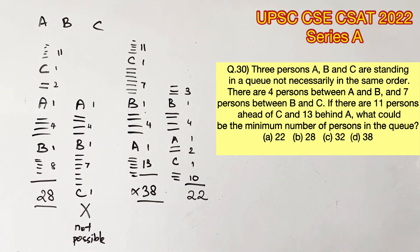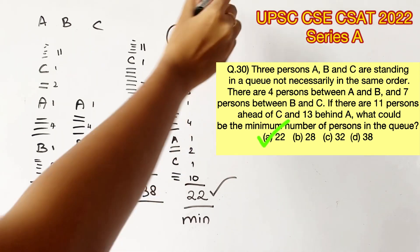So this is the minimum value that we are getting and the minimum possible value. So option A is the answer.